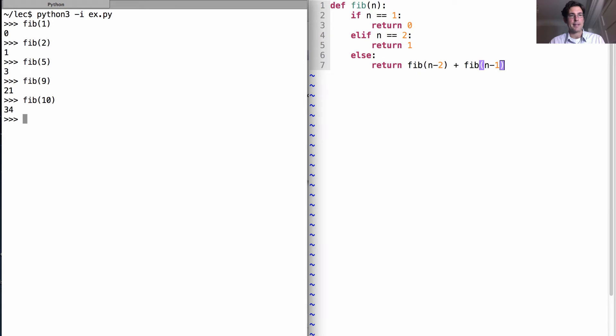And I told you they get big fast. The tenth is 34, the twentieth is over 4,000, the thirtieth is over 500,000, and the thirty-fifth is still computing, 5,700,000.